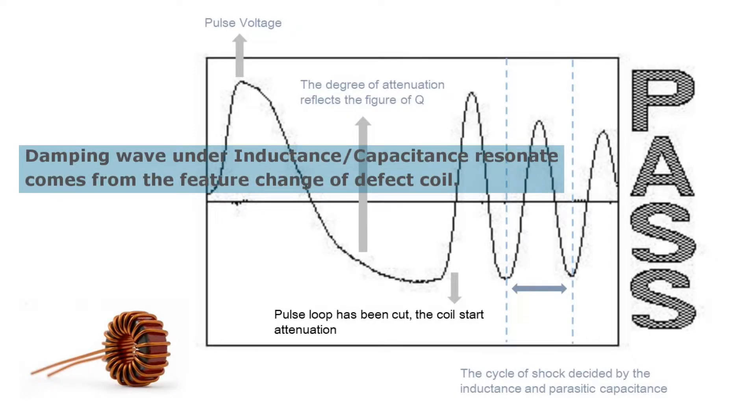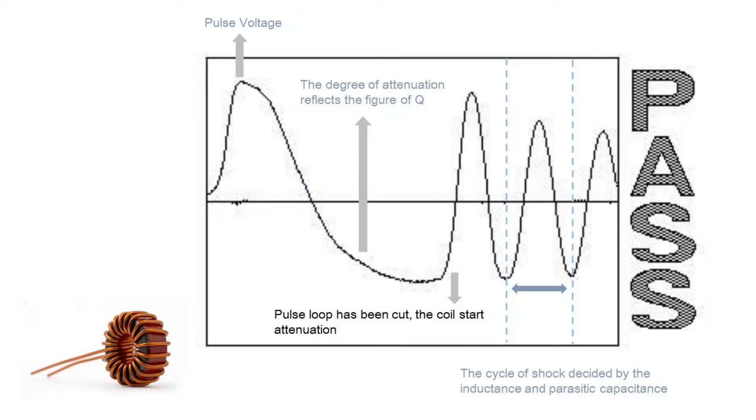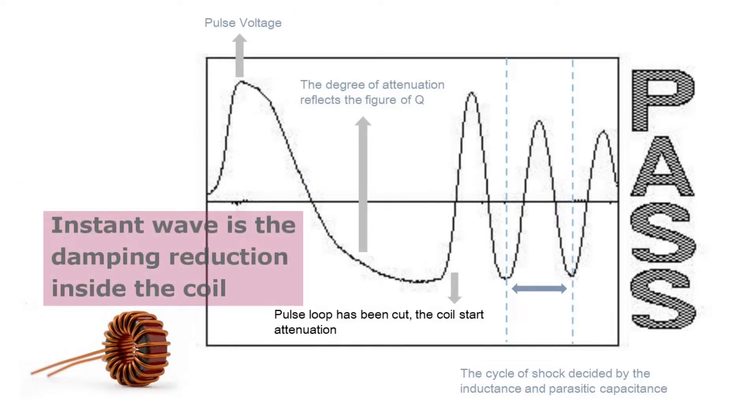The pulse voltage is non-destructive, instant voltage that applies on both sides of the winding and detects the DUT without damaging it.